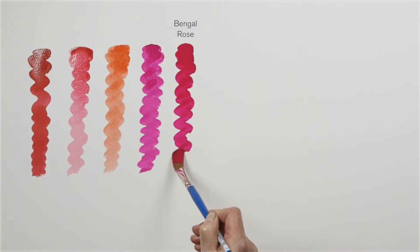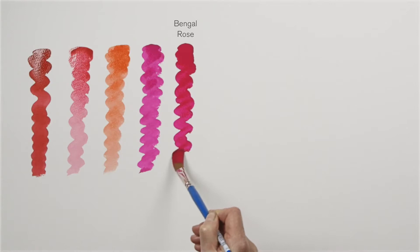This is Bengal rose which first came from a rose in India and is now synthesised. Not only is it more economical for the artist but more permanent retaining the same strong pink as you can see in this gouache.